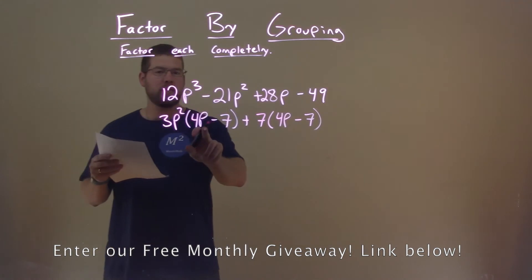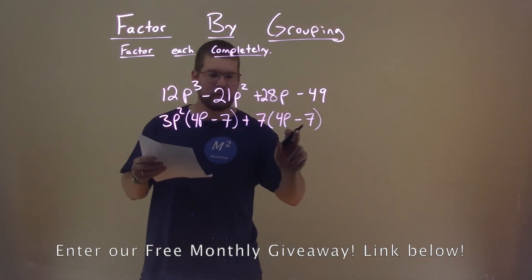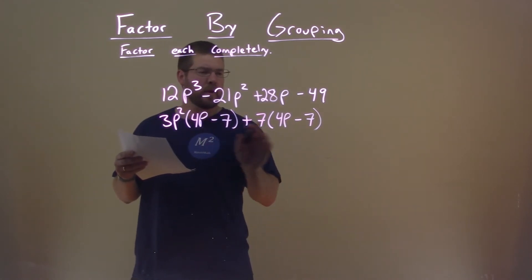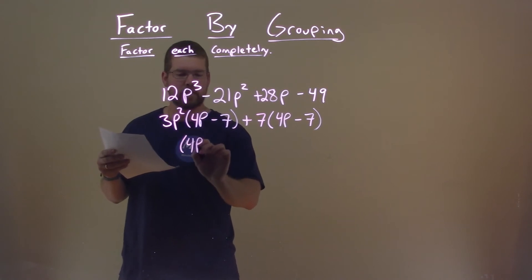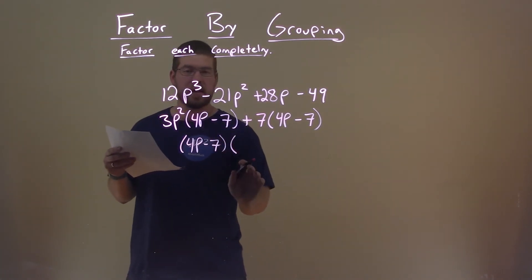So now we notice we have a parenthesis of 4p minus 7 and 4p minus 7, and we have our two parts separated by an addition sign. Well, we can pull out a 4p minus 7 here from both parts, pulling that out, and what are we left with?